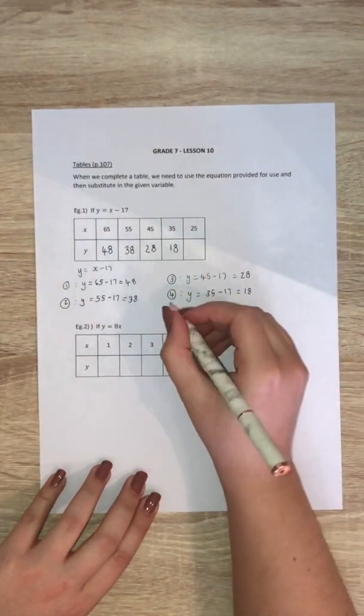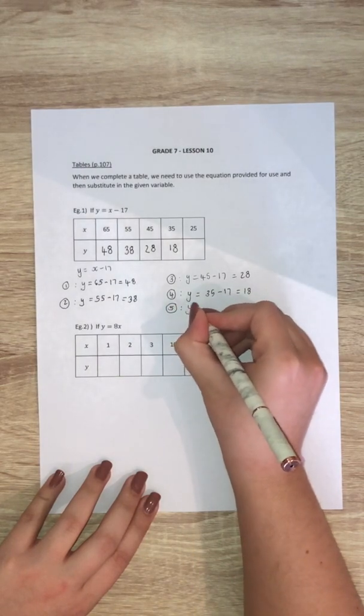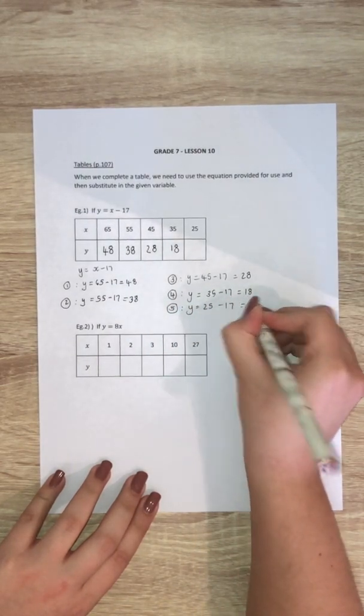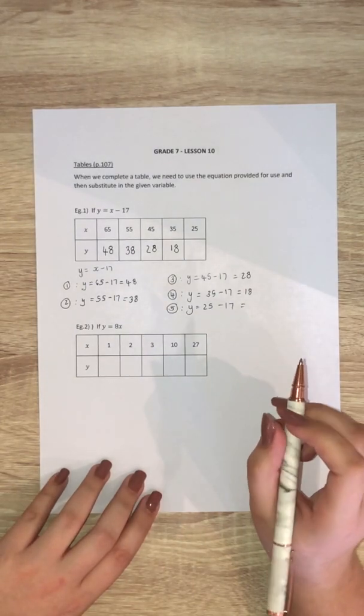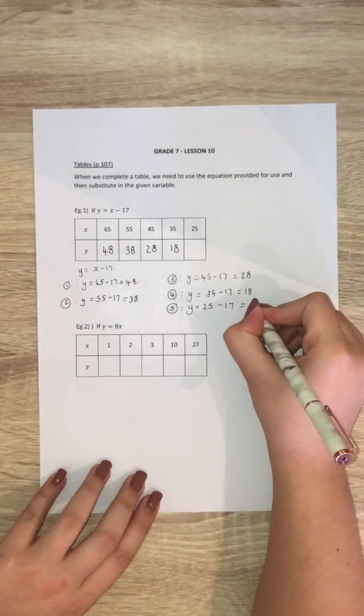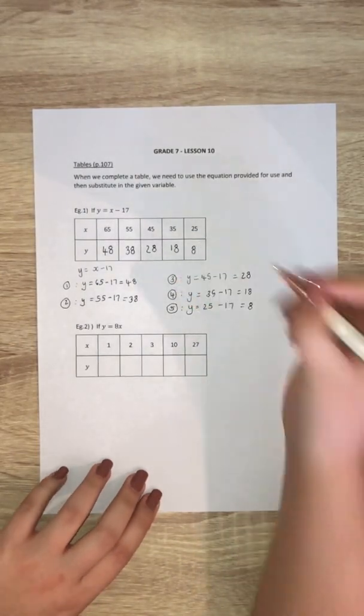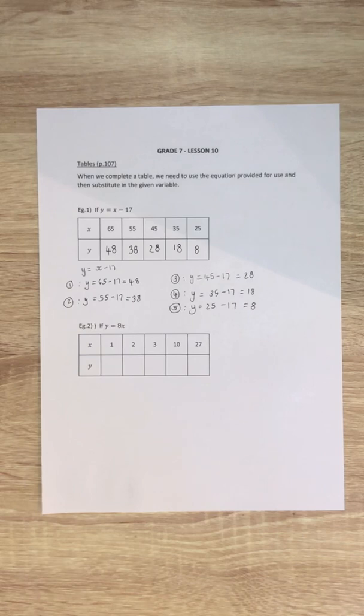And then the last one, y equals 25 minus 17. So 25 minus 10 is 15, 15 minus 7 is then 8. So there are my missing numbers in the table. All I did was substitute in the x values wherever I see an x in the formula and then I get my y value.